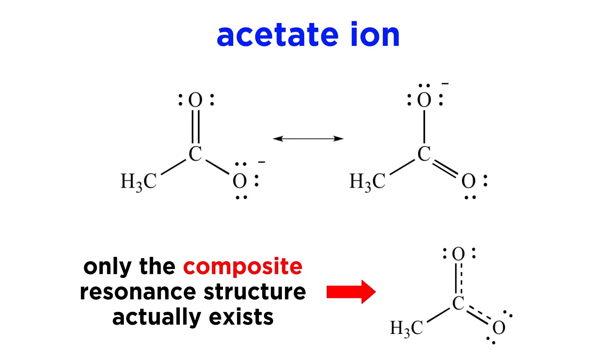Instead, it exists only in the form of its composite resonance structure, or resonance hybrid, which is obtained by combining all the possible resonance structures. One resonance structure has a negative charge here and a pi bond here, while the other resonance structure has those things reversed. So the composite resonance structure has partial pi electron density all along this portion of the molecule.